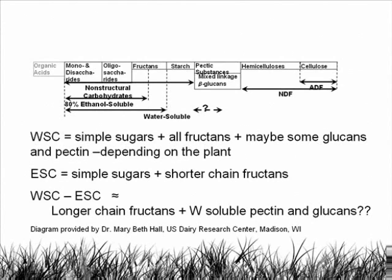This chart breaks down what is extracted with either ethanol or water. Non-structural carbs includes sugars, short and long chain fructans, and starch. 80% ethanol will pull out the sugars, fructooligosaccharides, and some of the shorter chain fructans. Hot water pulls out all those plus the longest chain fructans. Depending on the plant species being tested, sometimes some pectic substances and glucans will also come out, falsely elevating the test results. None of these procedures is as precise as we would like. Care must be taken when comparing test results from totally different types of plants. The difference between water-soluble carbs and ethanol-soluble carbs are the longer chain fructans, and maybe some water-soluble pectin and glucans.